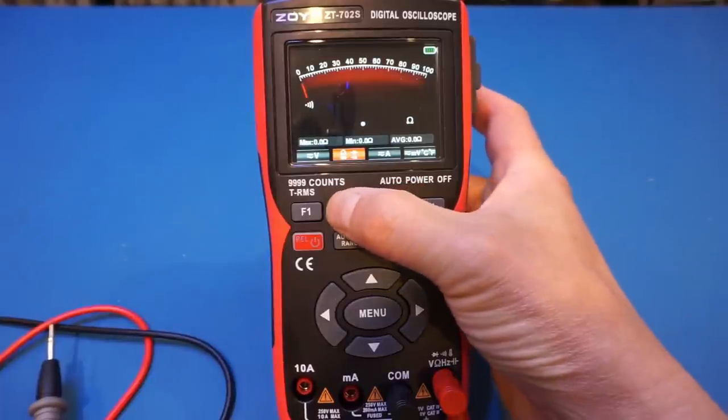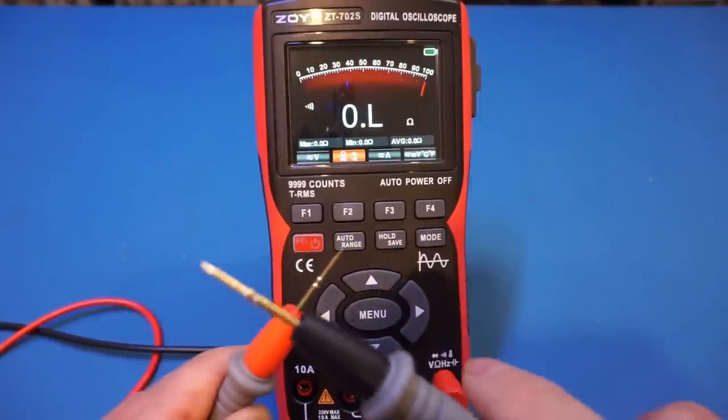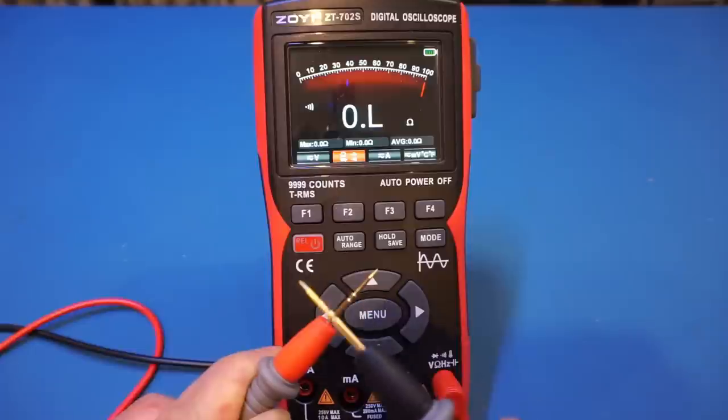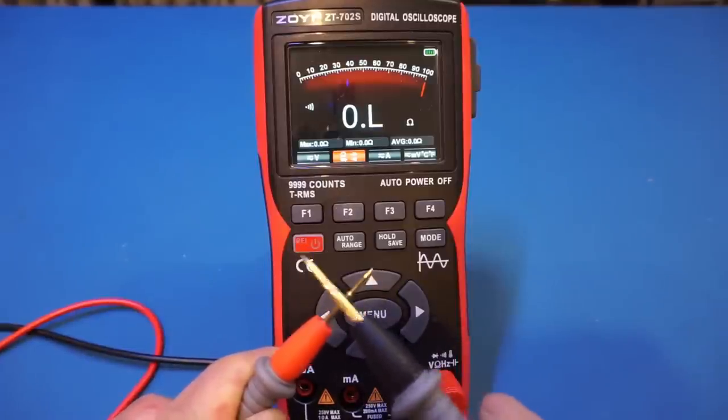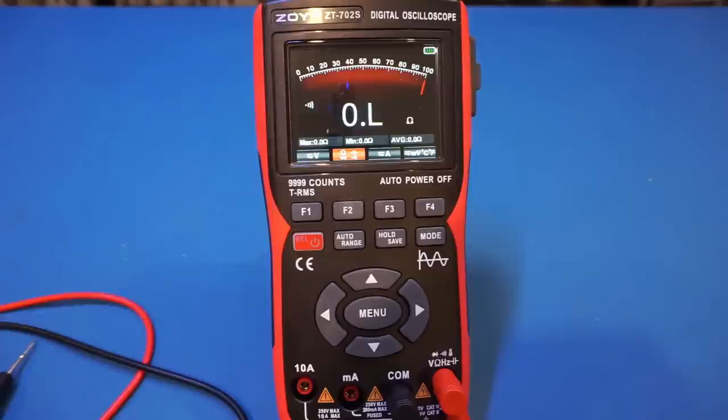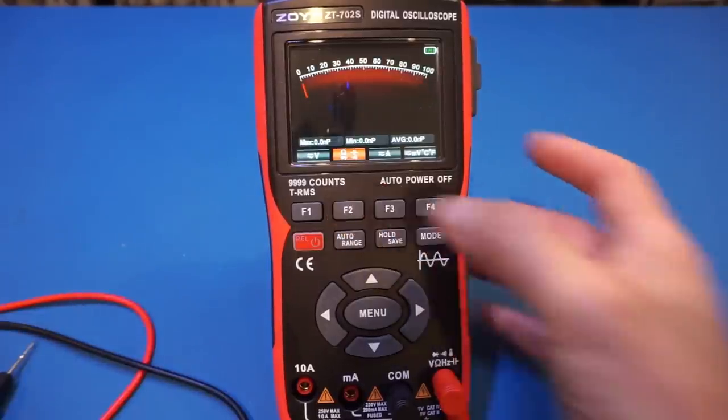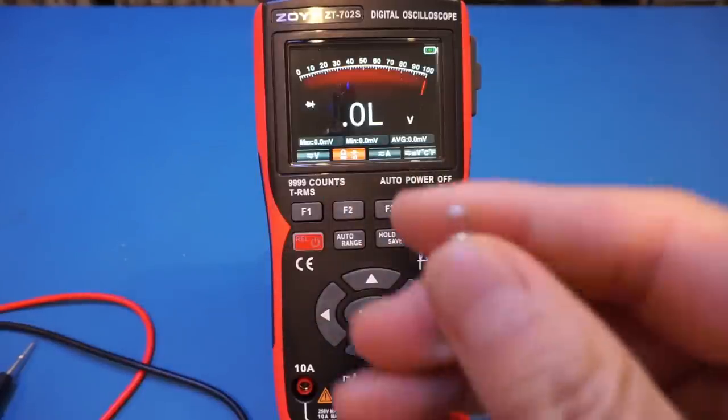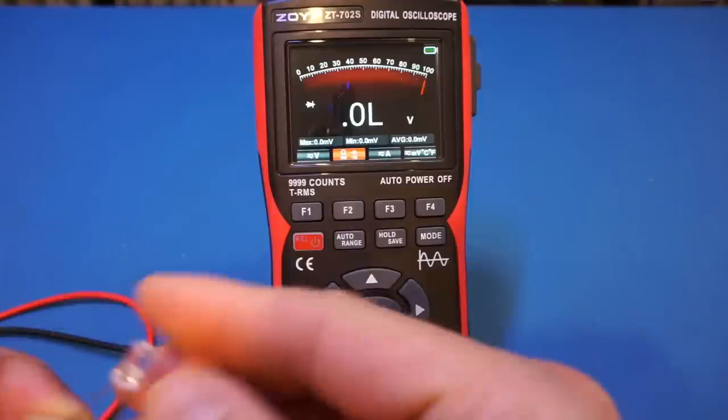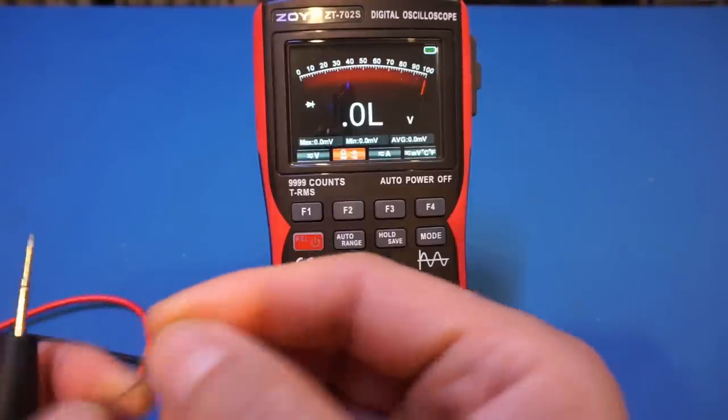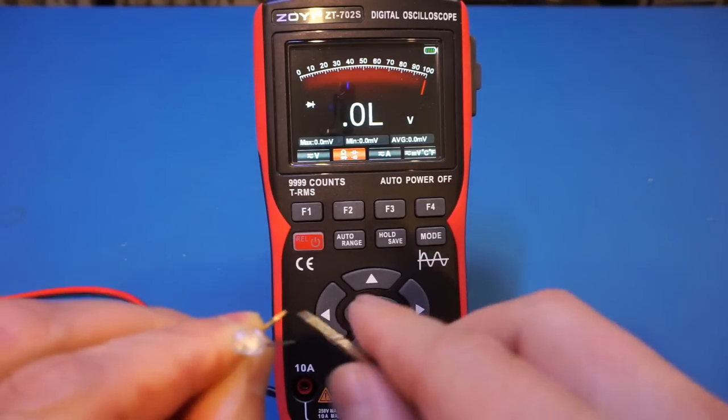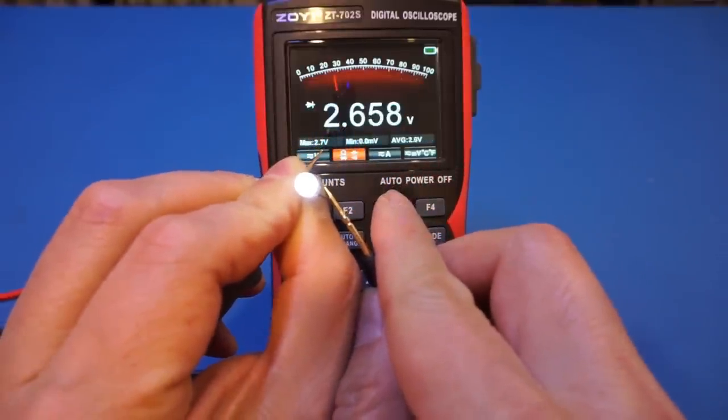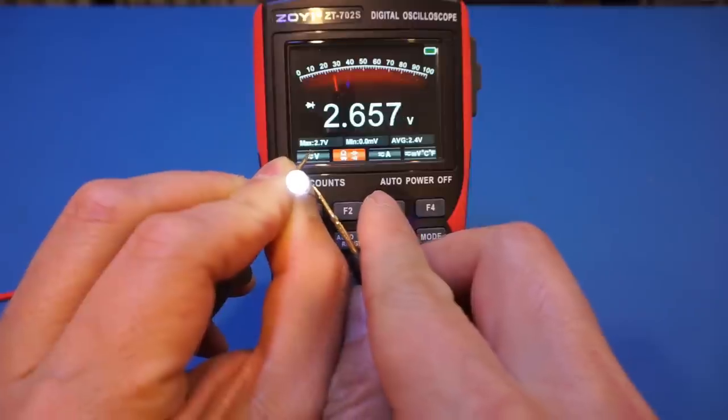Next is the diode measurement mode. For that, let's test a white LED, as a lot of meters have trouble with the white LED because the forward voltage drop is greater than 2.5 volts. So let's see if we can light this LED up. Yep, we have no problem lighting it up, as you can see here, and we are measuring the forward voltage drop of 2.658 volts, which is excellent.